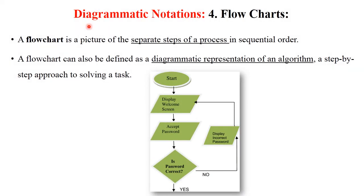The next diagrammatic notation is flowcharts. A flowchart is a picture of the separate steps of a process in sequential order. It can also be defined as a diagrammatic representation of an algorithm or step-by-step approach to solving a task. For example: start, display welcome screen, enter a password — if the password is correct, the application completes; if not, display an error, return to the welcome screen, and enter the password again.